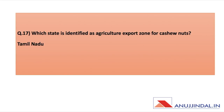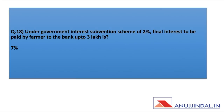Which state is identified as the agriculture export zone for cashew nuts? The exact question is not confirmed; it could be related to APEDA. The answer could be Tamil Nadu. Under the Government Interest Subvention Scheme — a budget question — the final interest to be paid by the farmer to the bank up to three lakh is seven percent.